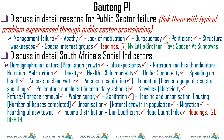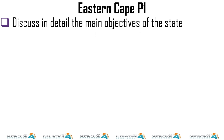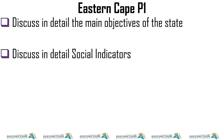Looking at these two essays, I'd go for the first one (public sector failure) because macroeconomics essays are generally easier. There are more essays in economic pursuits and some can be difficult. When preparing for the exam, I highly recommend macroeconomics because the essays there are easier. For Eastern Cape Paper 1, the essays were: discuss in detail the main objectives of the state, and discuss in detail social indicators — which we've already covered.